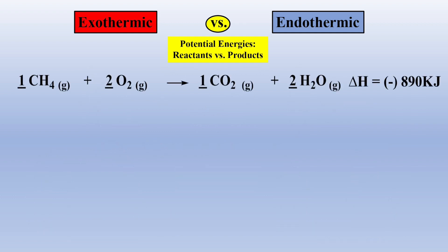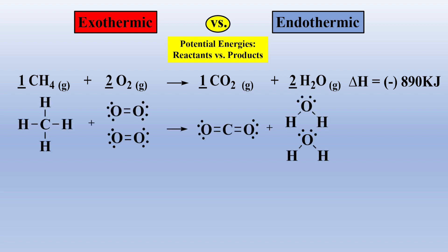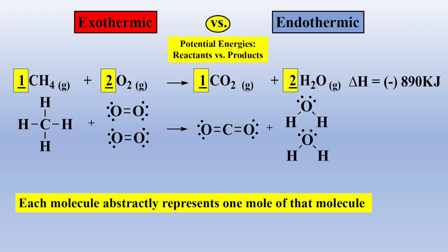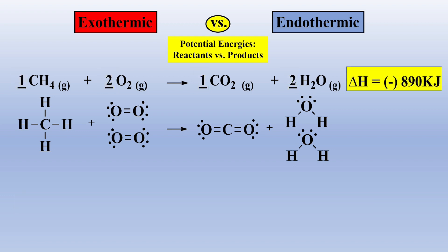To better envision these potential energy changes for exo- and endothermic reactions, let's again examine the combustion reaction of methane, and let's also include the two-dimensional Lewis diagrams for the reactants and products. From the balanced equation, we see that one mole of methane requires two moles of oxygen to afford one mole of carbon dioxide and two moles of water. Thus, each drawn molecule abstractly represents one mole of that molecule. We also know the reaction is exothermic because the change in enthalpy is negative.